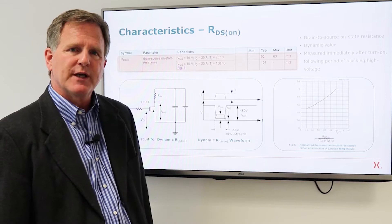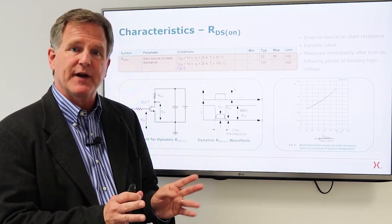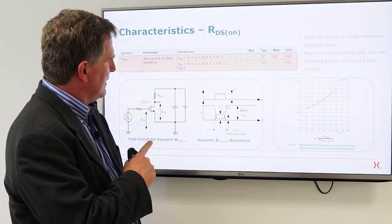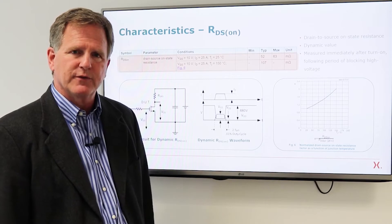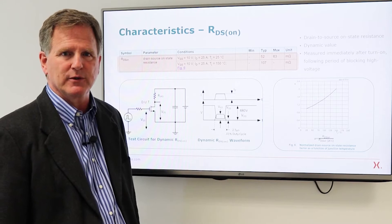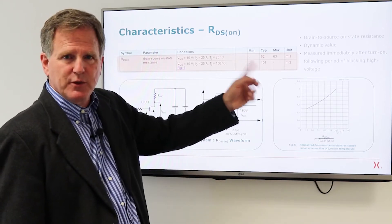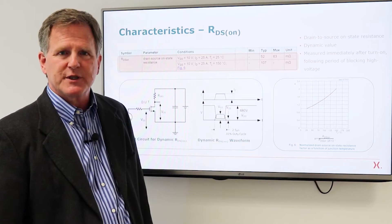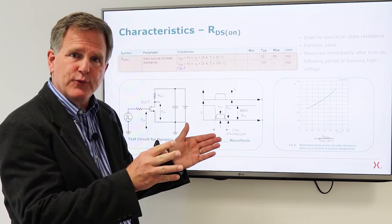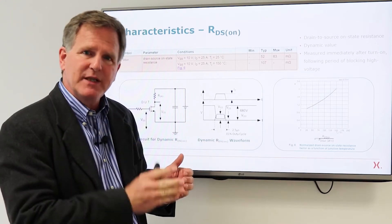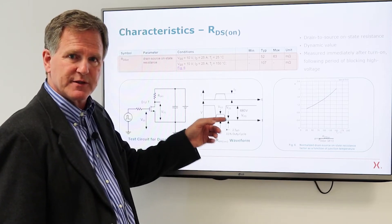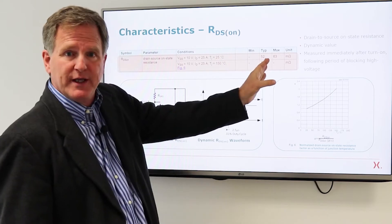Now there's a whole section of characteristics defining how the device operates in its intended operating conditions. The on resistance is one which you would think is familiar but actually for GAN it's important to understand this as a dynamic variable. This is the resistance you will achieve in your actual switching circuit and when we test it we use a circuit like this where we have it off for an extended period turn it on and immediately measure the drain to source voltage and from that calculate the on resistance. So that's how we test it that's what we guarantee.